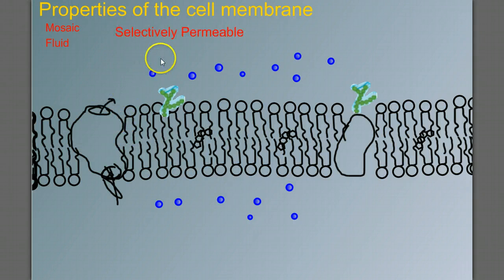That means that it lets some things pass through it, but not others. So let's think about this. What type of particles could move through the cell membrane? Well, one of the physical properties of something that can move through the cell membrane is that it's got to be small.